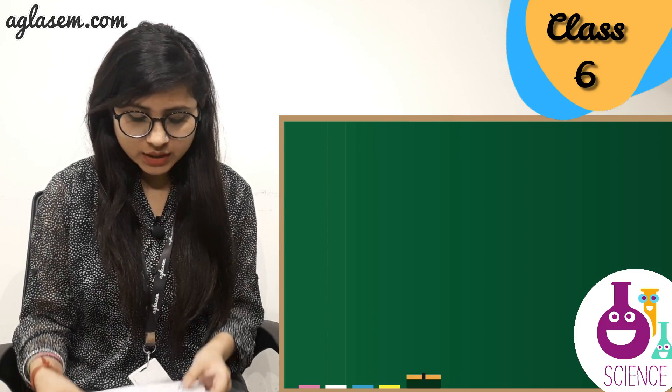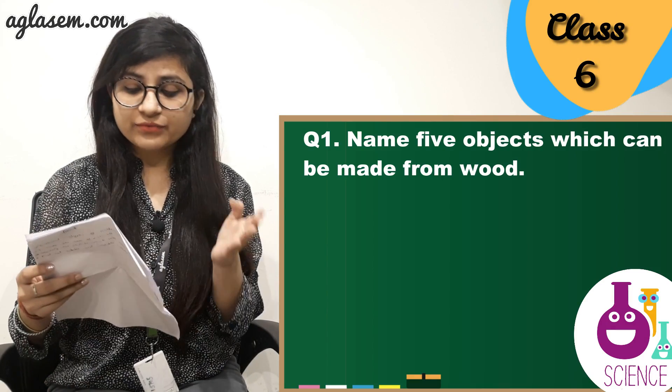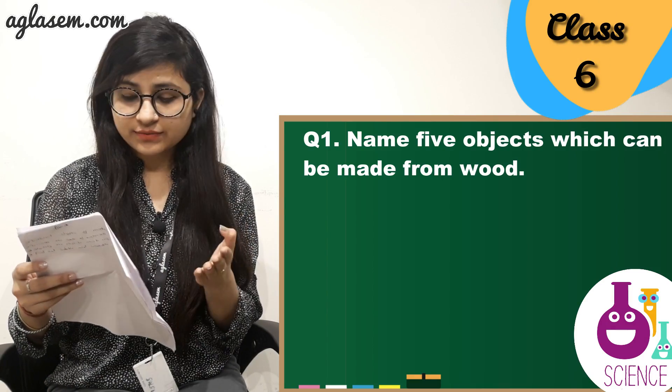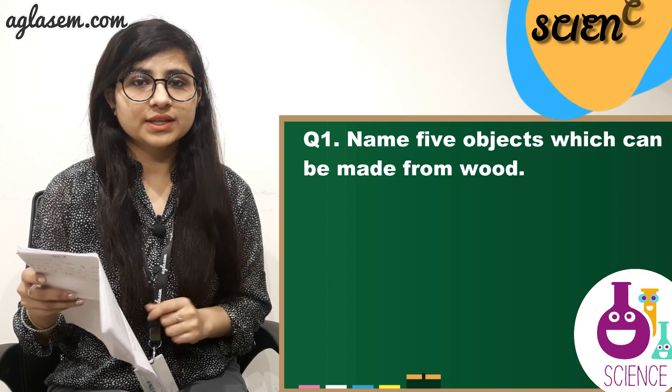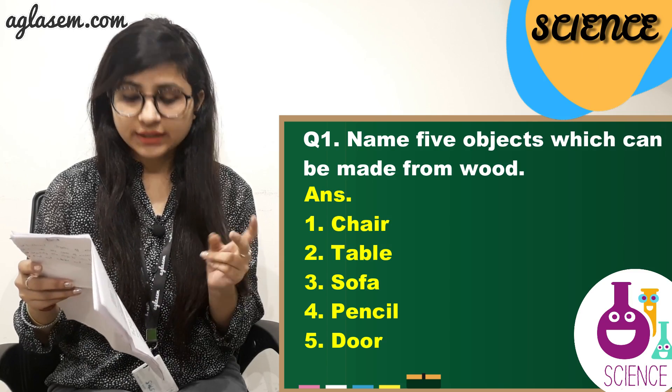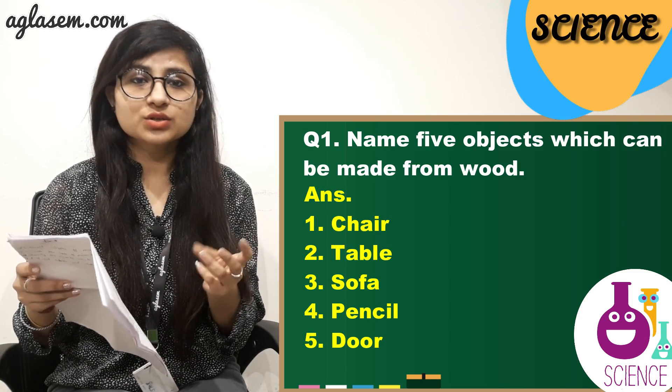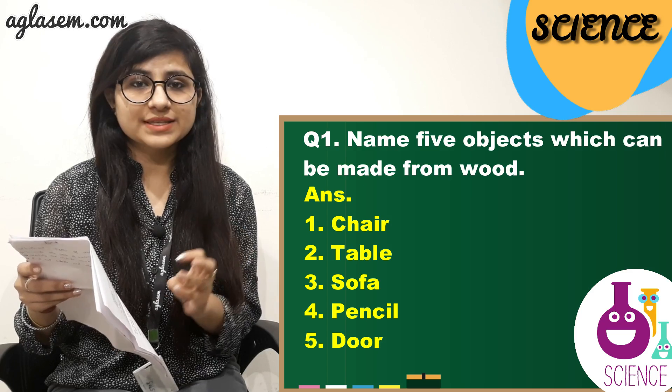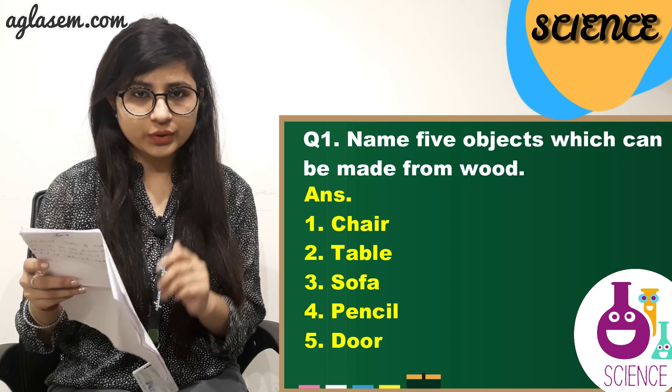Turn your page number 33, question number 1. Name 5 objects which can be made from wood. The answer is: chair, table, sofa, pencil, door.